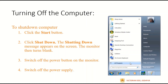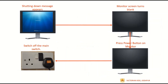Now I will explain the entire procedure with the help of pictures. On the screen you can see the Start button — press it as the first step, and the Start menu will appear. Step 2: press the Shut Down button to shut down the computer. After pressing it, the shutting down message will appear on the monitor.